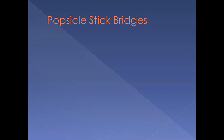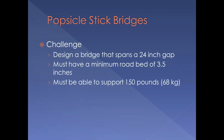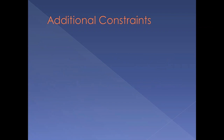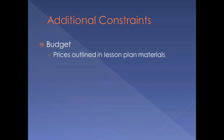We're now ready to begin the popsicle stick bridge challenge. Your task is to design a bridge that can span a 24-inch gap. Also, your bridge must have a road bed that is a minimum of 3.5 inches wide. Lastly, your bridge must be able to support 150 pounds. Here are some additional constraints — you'll be imposed with a budget. The prices for materials, services, and tools will be outlined in the lesson plan materials.